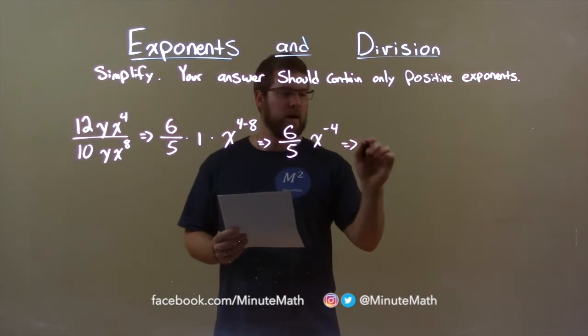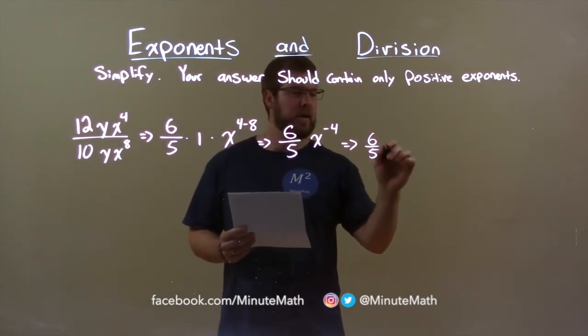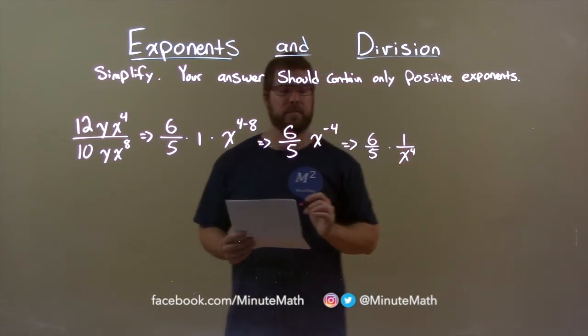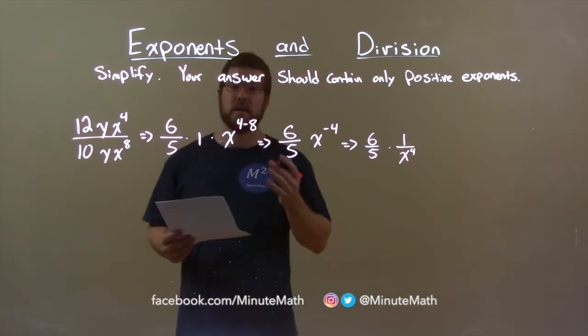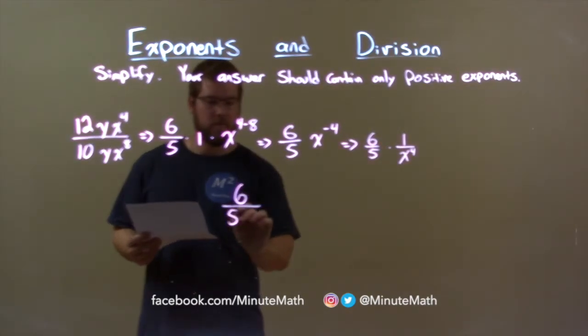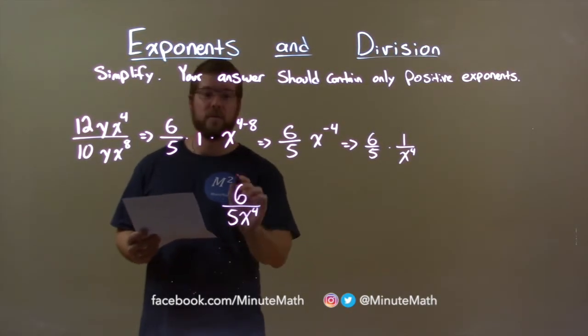x to the negative 4th power is the same thing as saying 1 over x to the positive 4th power. Combine all that together to get our final answer: 6 over 5x to the 4th power.